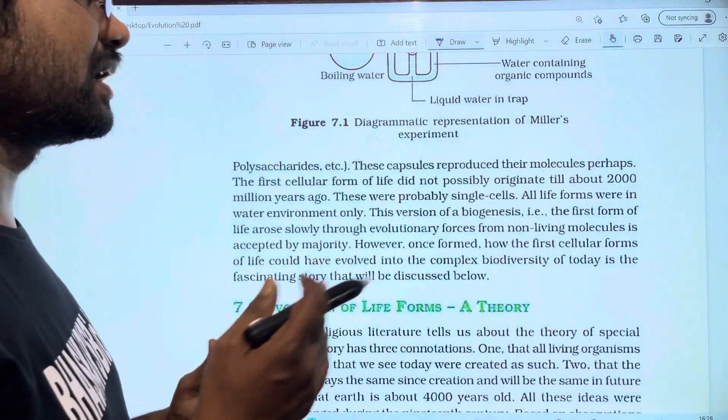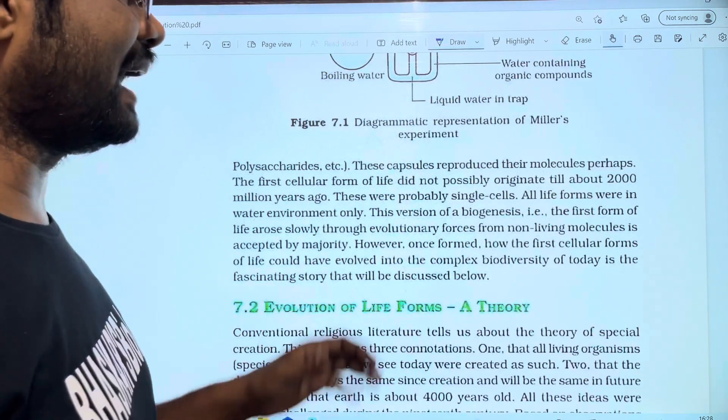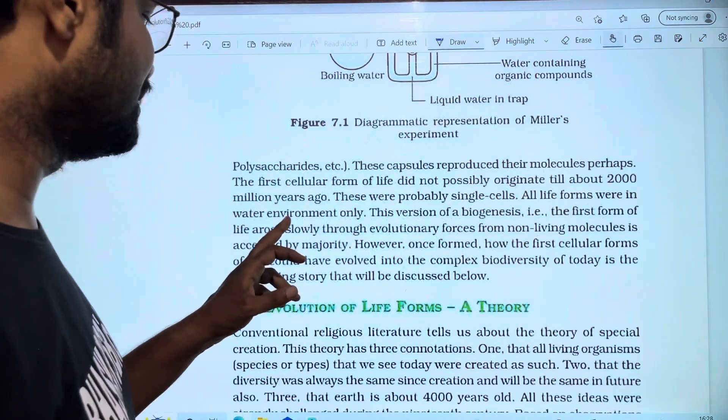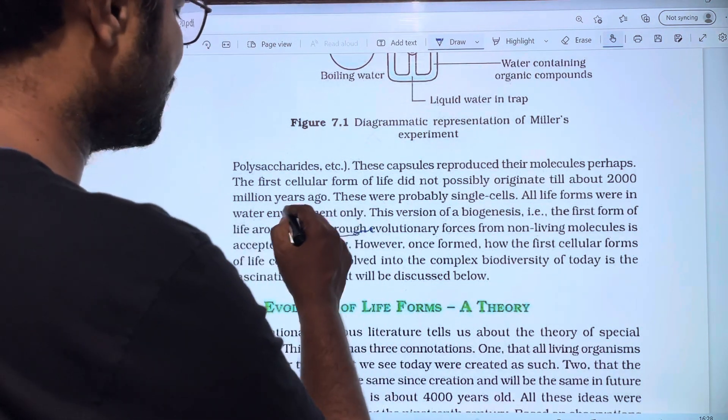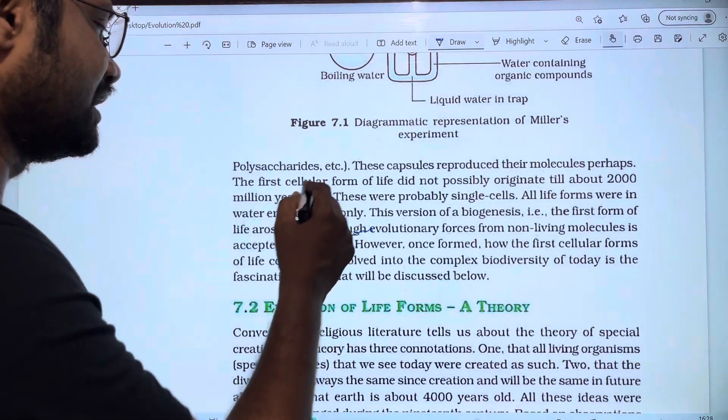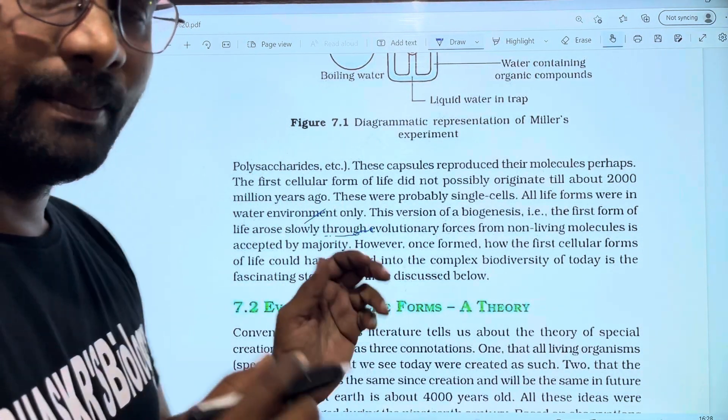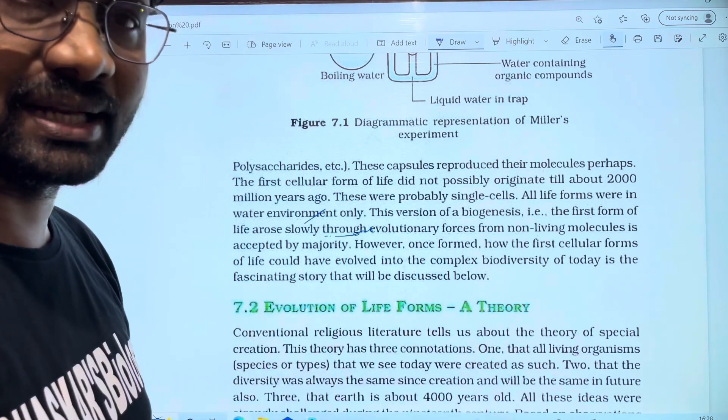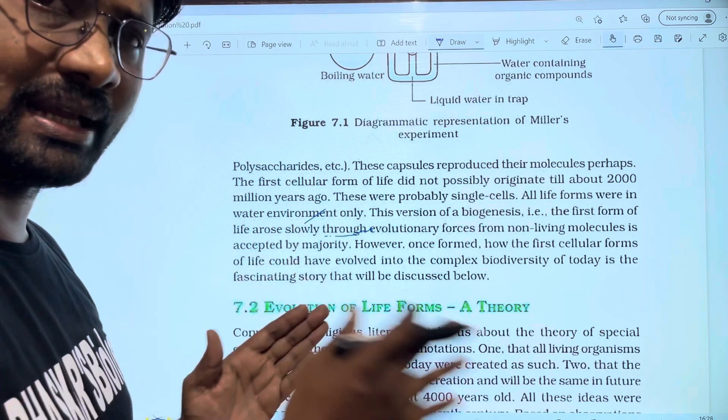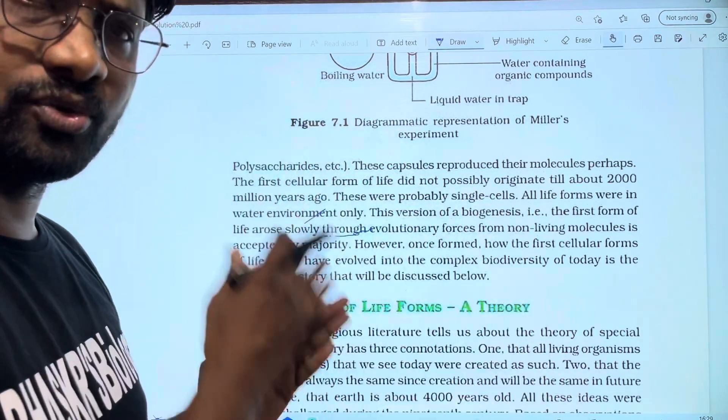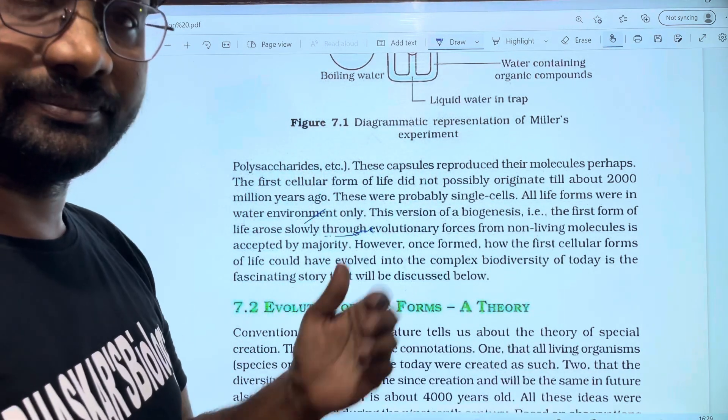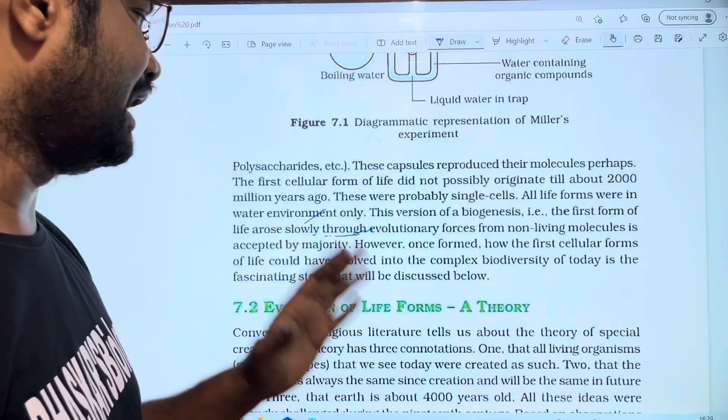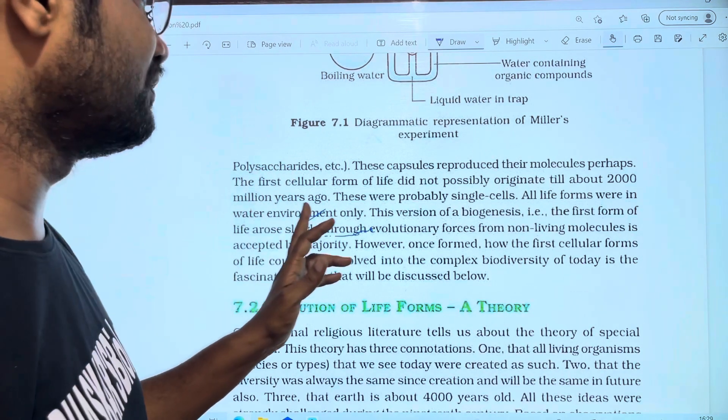The first life forms were in water environment only. All life forms started in water. Invertebrates and vertebrates started in the first stage of water. Vertebrates such as fishes were the first part of life forms in the water environment.